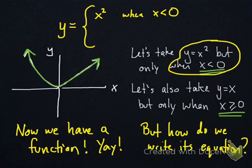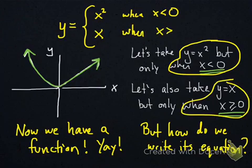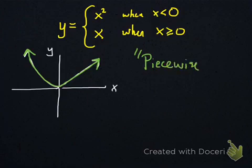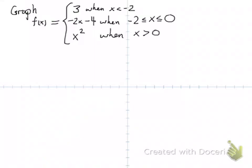Now I bet you can figure out what the second piece is. It's the function y equals x, but only when x is bigger than or equal to 0. And again, these are called piecewise functions. The reason they're called piecewise is because you're taking pieces of separate individual functions to create a new one. Okay, let's try a more complicated example now.